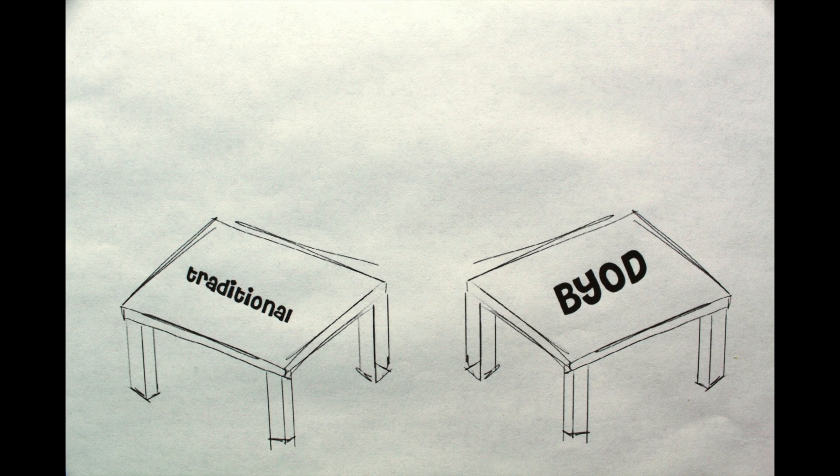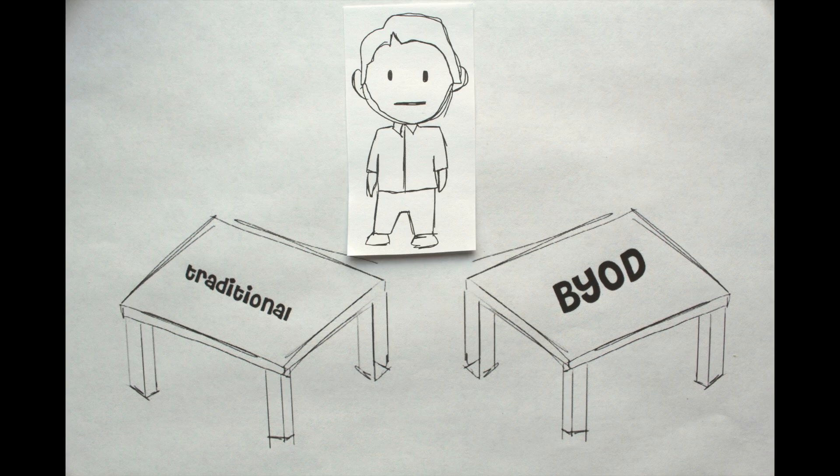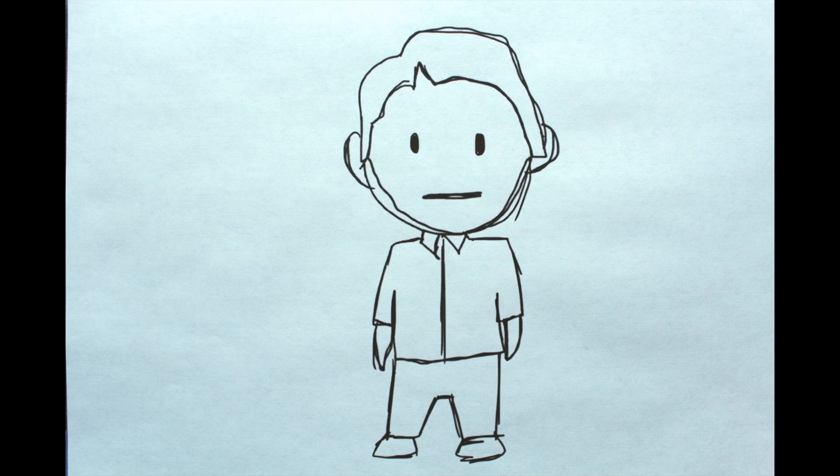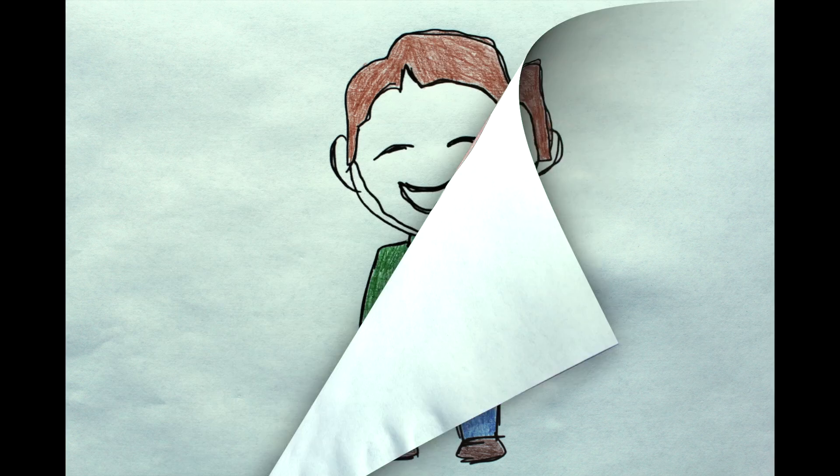When you arrive at the labs, there will be different check-in tables for traditional stations and Bring Your Own Device. Register at the Bring Your Own Device table and continue on into the green room. When space is available for you, the seating desk in the green room will call your name, and you can enter into the labs.